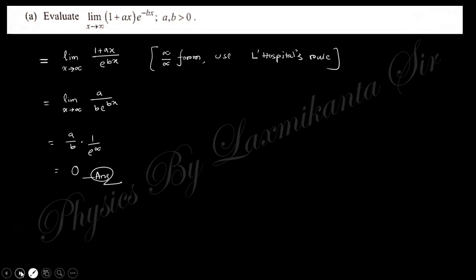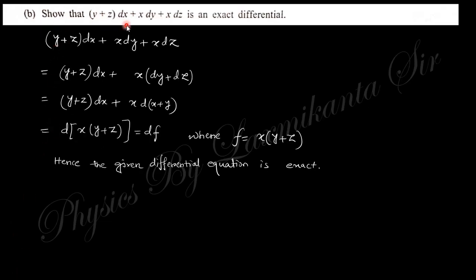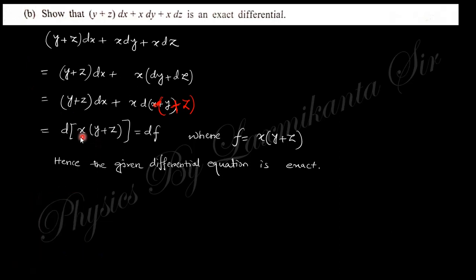The next question says: show that this function is an exact differential. You can see this expression can be taken as x·d(y + z), since the two terms are (y + z)dx and x·d(y + z). This dot product gives d(x·(y + z)), which can be written in the form df where f = x(y + z). So this is an exact differential.